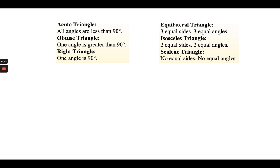Acute angles are angles that are less than 90 degrees, so an acute triangle would be a triangle where all three angles are less than 90 degrees. An obtuse angle is greater than 90 degrees, so an obtuse triangle is where one angle in that triangle is greater than 90 degrees. A right angle is exactly 90 degrees, so a right triangle has one angle that's 90 degrees. You can use the corner of your paper to help you see if a triangle is exactly 90 degrees.